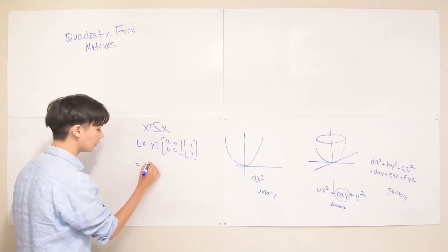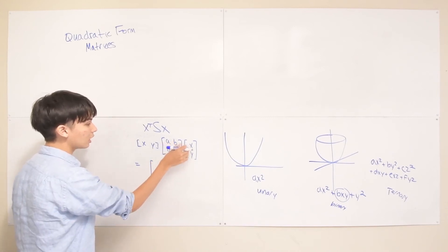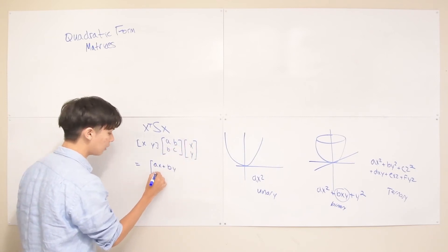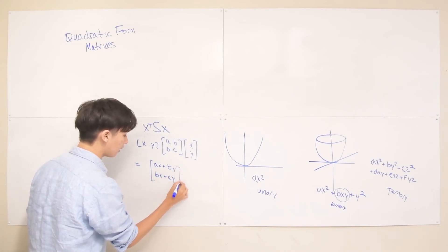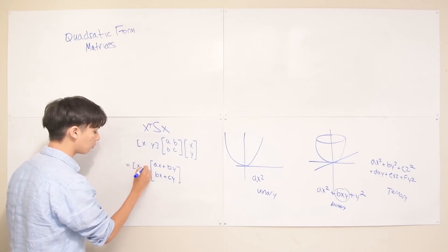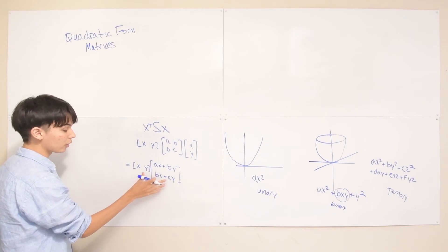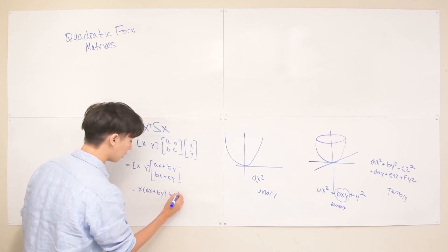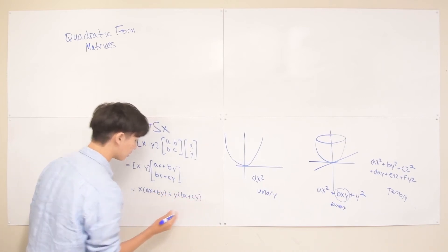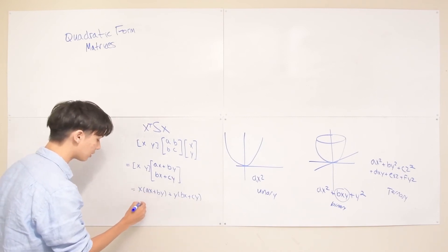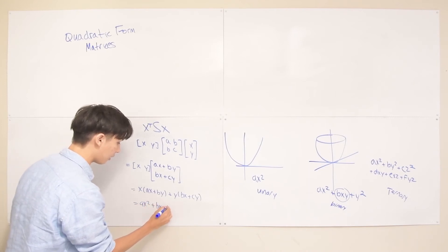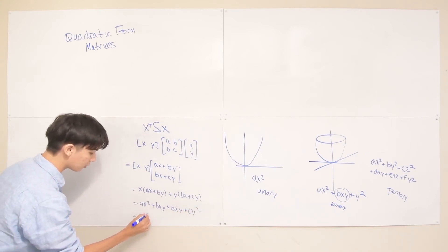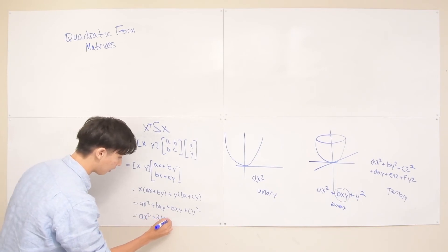Multiplying S times x first gives us a vector: the first row [a, b] dotted with [x, y] gives ax plus by, and the second row [b, c] gives bx plus cy. Then we take the dot product with x transpose [x, y], giving us x(ax + by) + y(bx + cy). Expanding and distributing: ax squared plus bxy plus bxy plus cy squared. Combining the middle terms, we finally get ax squared plus 2bxy plus cy squared.